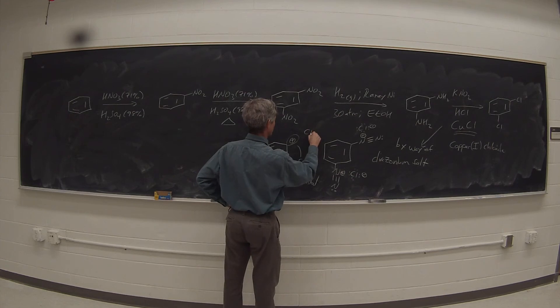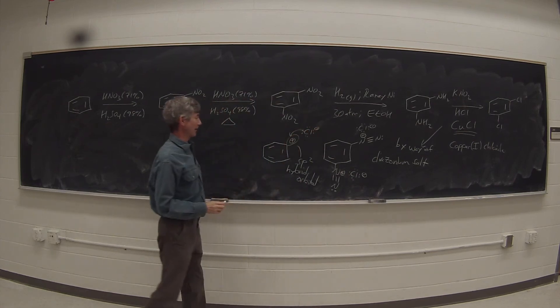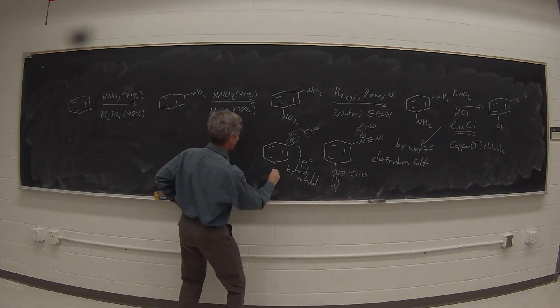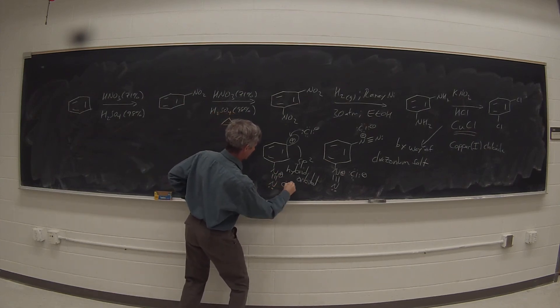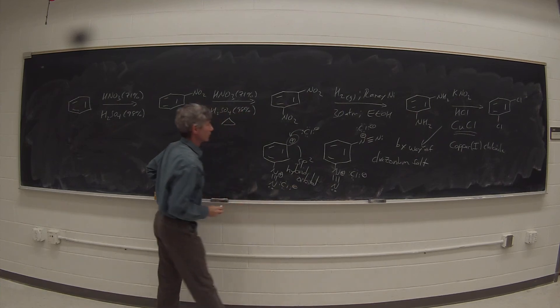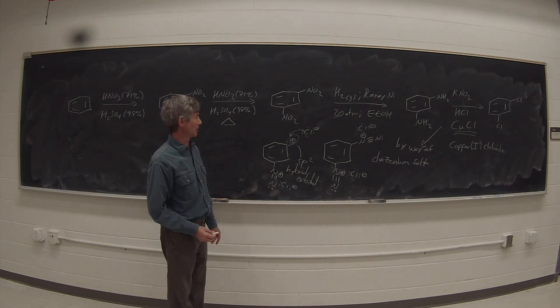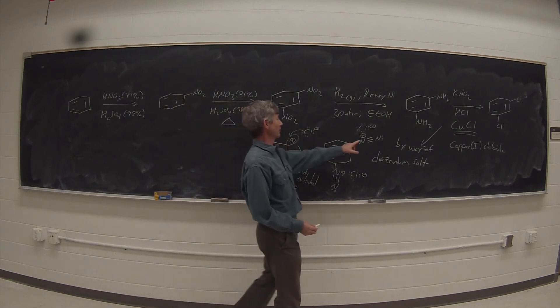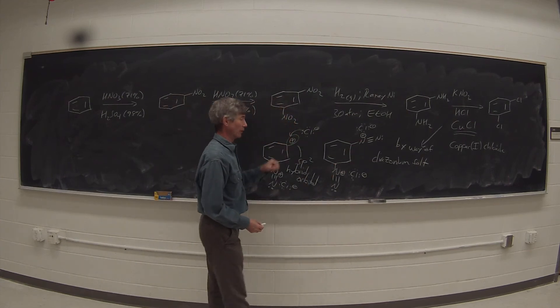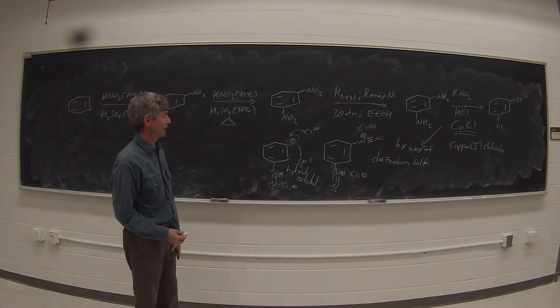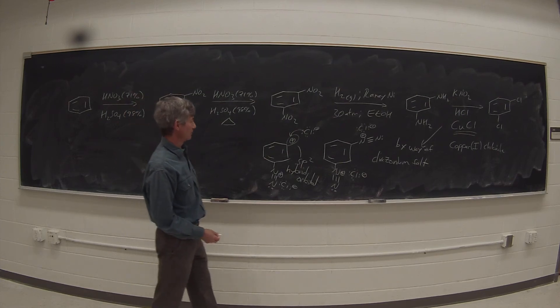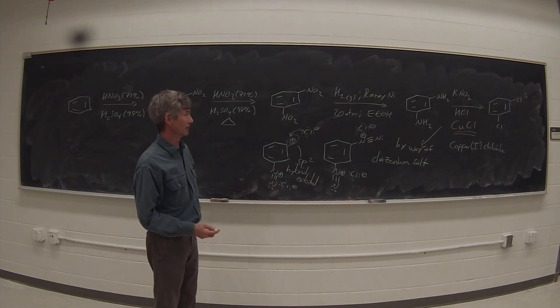Chloride ion then would come in and readily attack that positive charge, and then it would do it again over on the other side because we've got a second diazonium salt over here. Whether or not that positive charge is a discrete intermediate or formed at the same time as the nitrogen is leaving with the chloride coming in in a concerted step, I'm not entirely sure. But generally, sp2 hybridized positively charged is not such a great idea.